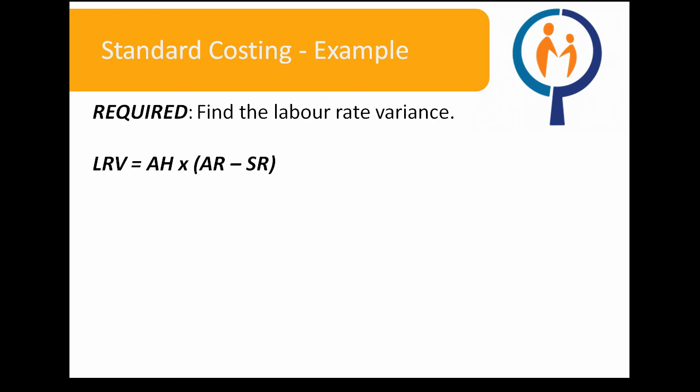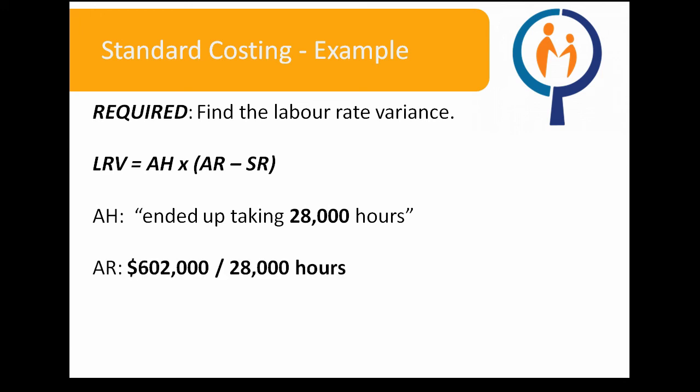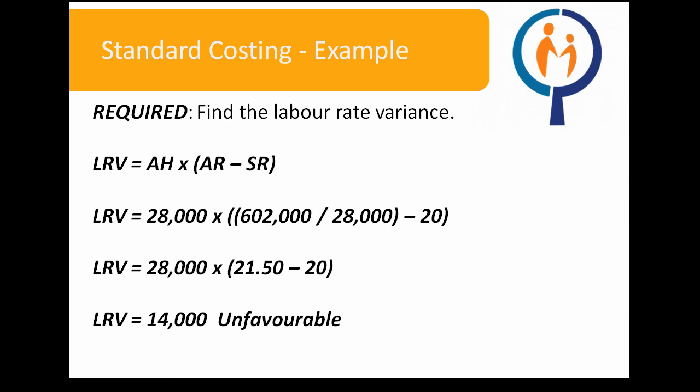For the labor rate variance, the company ended up using 28,000 hours to produce its 10,000 lawnmowers, so 28,000 is our actual hours used. Our actual rate per hour was $602,000 in labor costs divided by 28,000 hours used, and our standard rate was quoted at $20 per hour. The result is a $14,000 unfavorable variance, as the actual rate is more than the standard labor rate quoted.